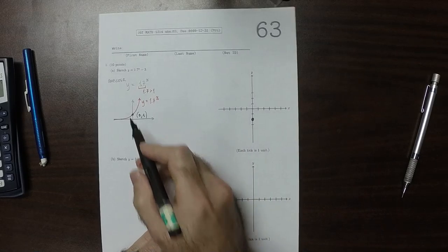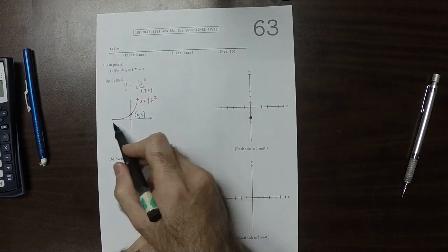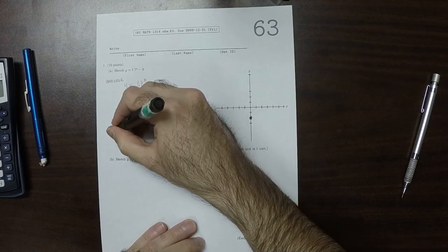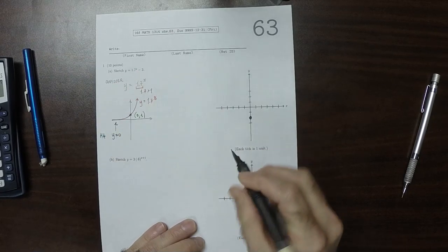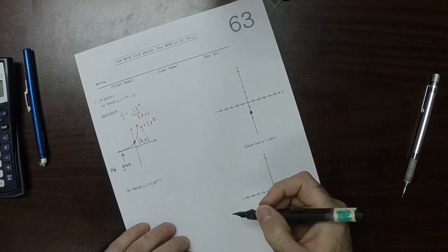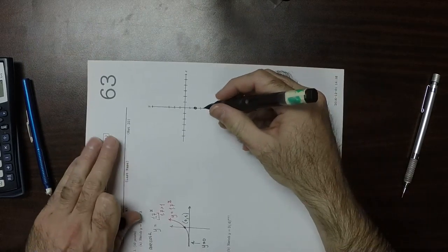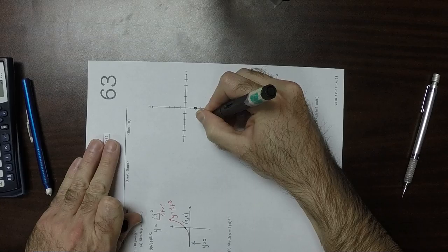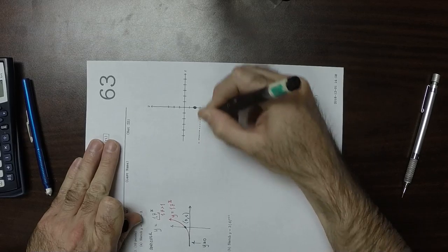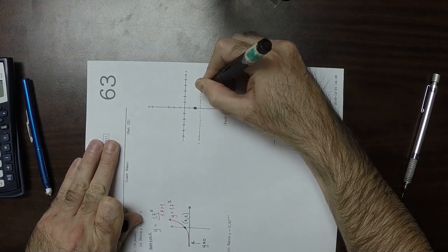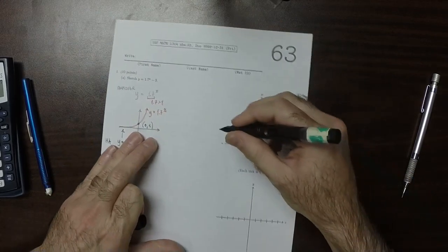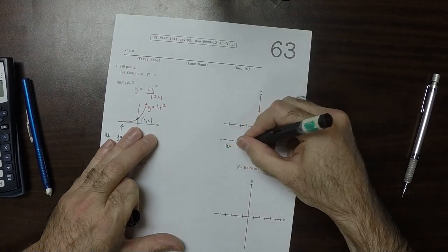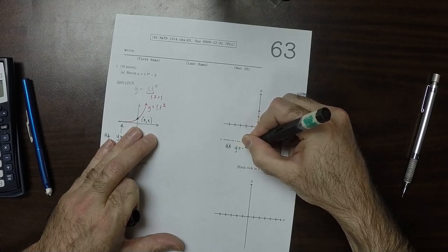So it's been moved down. And this horizontal asymptote of y = 0, it also will be moved down. So this is 1. So this is now a horizontal asymptote of y = negative 3.